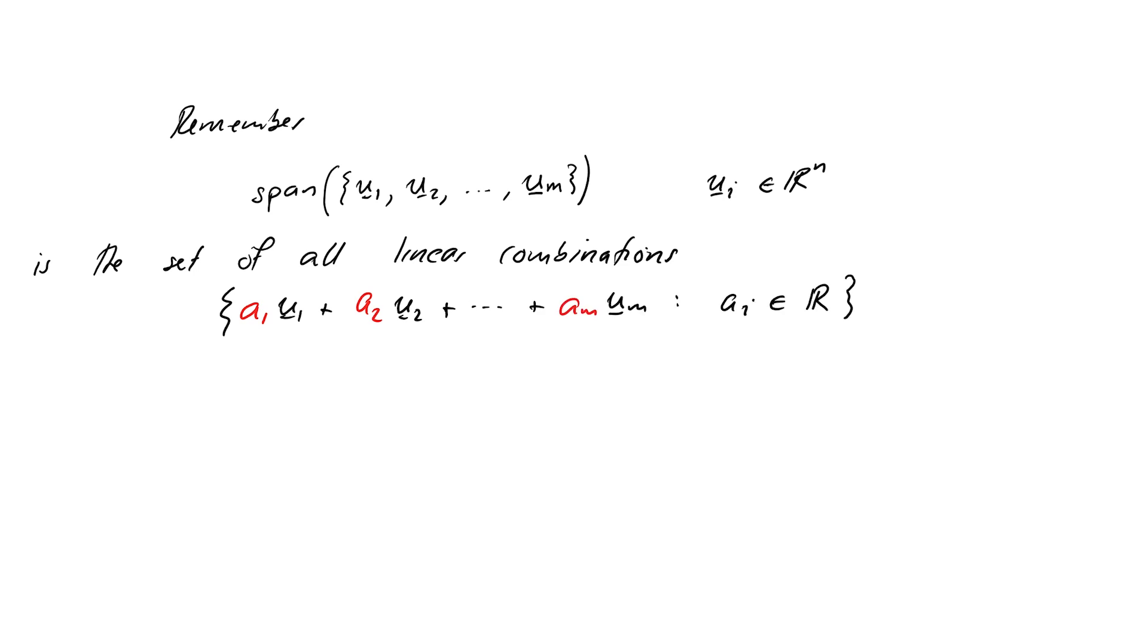So we looked briefly at spans of vectors before when we learned about linear independence. Remember that the span of a set of vectors, which we can write as the span of u1, u2 through to um, where the u's are themselves in Rn, is just the set of all possible linear combinations of those vectors themselves. It turns out that these sets of vectors are actually the spans are pretty fundamental and they're known as subspaces of Rn.